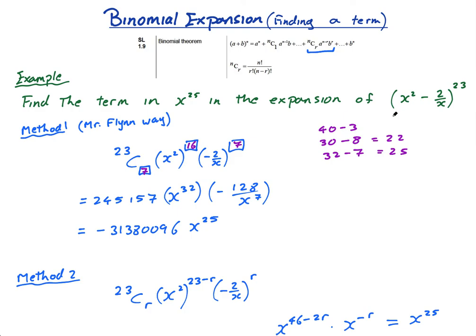That's the binomial expansion. Pretty much every single year, almost always in paper 2, it comes up. It's normally a question like this: find the term in this. Or sometimes they say find two terms, and then they say one is twice as big as the other, so you have to form an equation and solve it that way. Sometimes they say find the term, and sometimes they say find the coefficient. If they say find the coefficient of x^25, then it's just this that they want. The -31,380,096. See you in the next lesson.